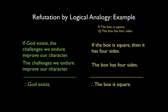Suppose the first premise is true—that is, if the box is square, then it has four sides. And suppose the second premise is true—that the box has four sides. It can still be false that the box is a square, for example, if the box is a rectangle.